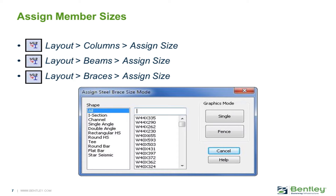Next, you will learn how to assign member sizes to lateral steel beams, columns, and braces. In the RAM Modeler, member sizes can be assigned to lateral steel members using the AISC steel shapes that are defined in the design steel tables. Since RAM Frame performs a full finite element analysis on the lateral frame system, member sizes must be assigned to lateral members prior to performing an analysis on the lateral force-resisting system.